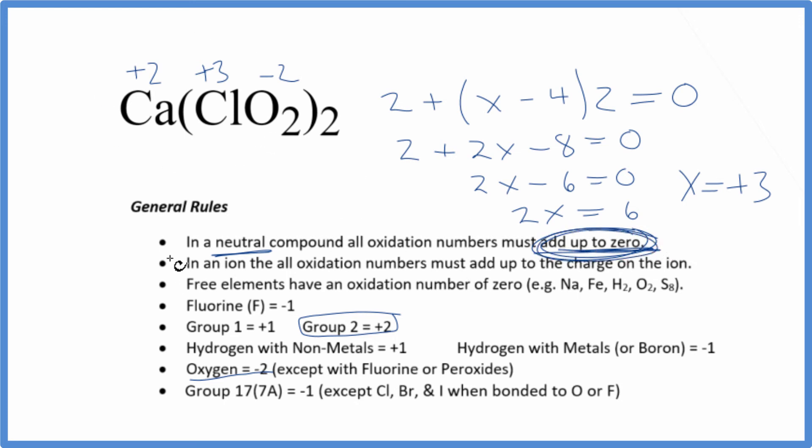We could have also used this rule right here if we recognize that ClO2, that's the hypochlorite ion, ClO2 minus, and we could use this rule to figure out chlorine as well. You get the same answer either way. This is probably a little more straightforward though.